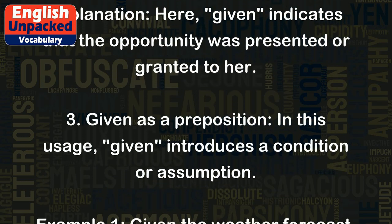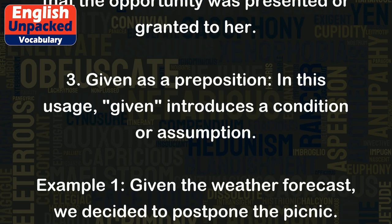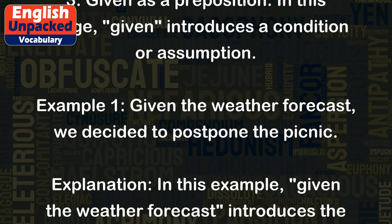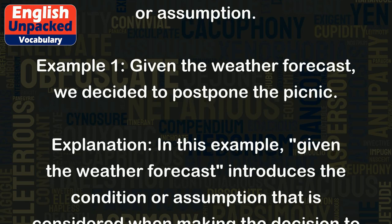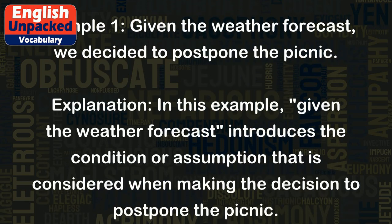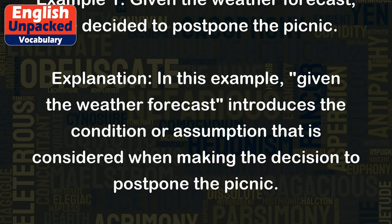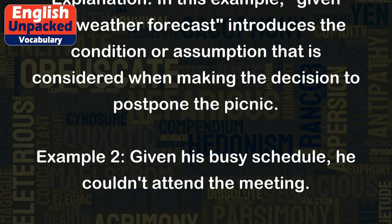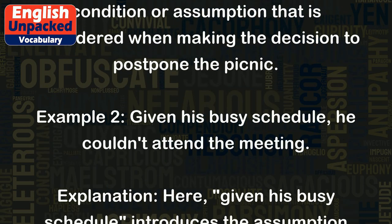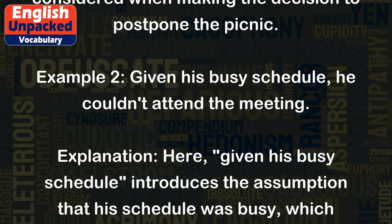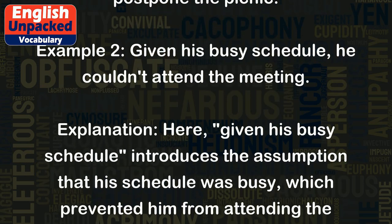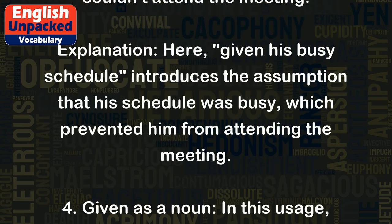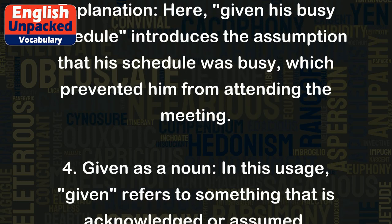Given as a preposition. In this usage, 'given' introduces a condition or assumption. Example 1: Given the weather forecast, we decided to postpone the picnic — introducing the condition considered when making the decision. Example 2: Given his busy schedule, he couldn't attend the meeting — introducing the assumption that his schedule was busy, which prevented him from attending.